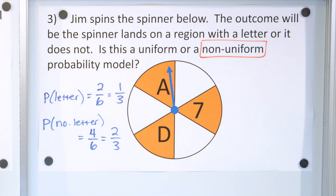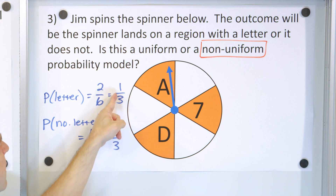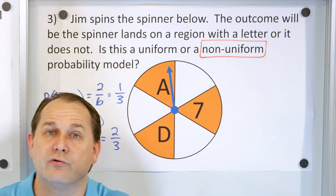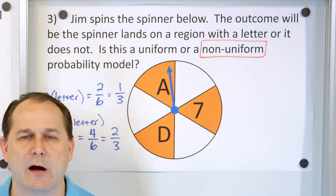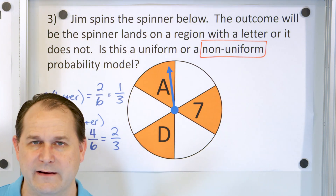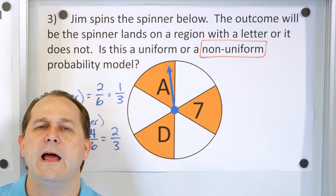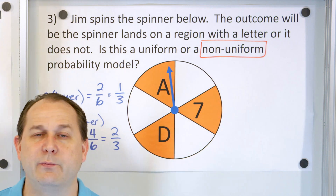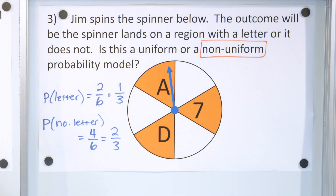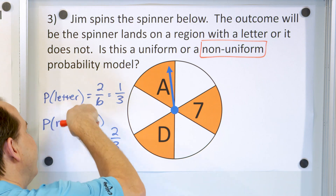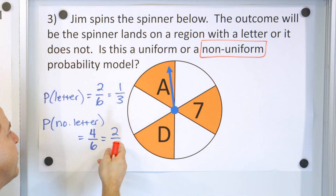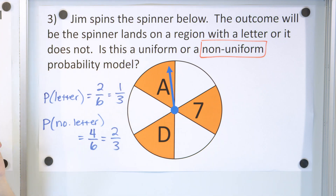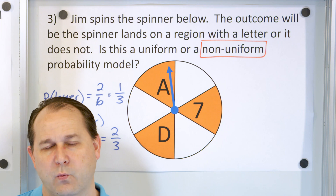What is the probability here? Two-thirds plus one-third — same common denominator. Add the numerators: one plus two is three. Three over three is one. We again find that we add the probabilities together and get one, because no matter what, you're going to land on either a letter region or a non-letter region. Those two situations cover the entire thing, so when we add the probabilities together we're guaranteed to land on one of those. They should add up to one.